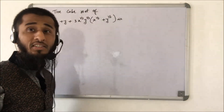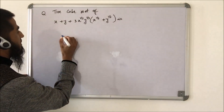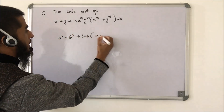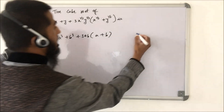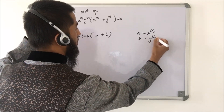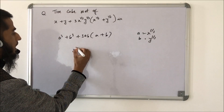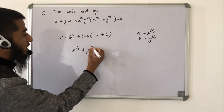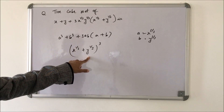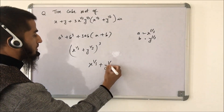This was a straightforward question from NTSE 2017 where we directly compare with the identity a³ + b³ + 3ab(a + b), where a = x^(1/3) and b = y^(1/3). So a³ = x and b³ = y, and the expression is simply (x^(1/3) + y^(1/3))³. Therefore the cube root of the expression equals x^(1/3) + y^(1/3).